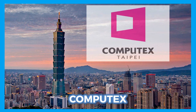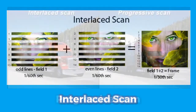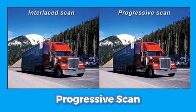Computex is the world's largest computer and technology trade show, held in Taipei, Taiwan. There are two types of display scanning: interlaced and progressive. In an interlaced scan, used by older TV systems, only half of the picture appears on screen at one time. Progressive scan, used by HDTVs, shows the full picture at once.